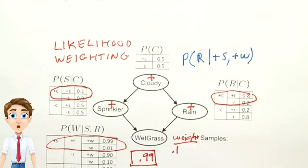So we take our old weight and multiply it by 0.99, giving us a final weight of 0.099 for a sample of plus c, plus s, plus r, and plus w.